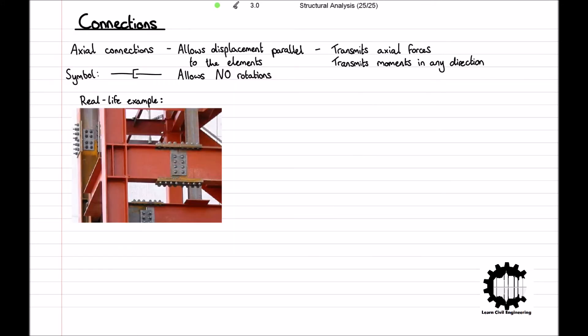Finally, this beam to beam connection is a real life example of an axial connection. The beams are connected such that they can only be displaced a small amount parallel to the beams. The connections transmit moments in any direction and also shear forces, and axial connections are most commonly found in beam to beam or column to column connections. Using our symbol for axial connections, this example would be modelled like so, where the vertical line is the column and the two horizontal lines are the connected beams.